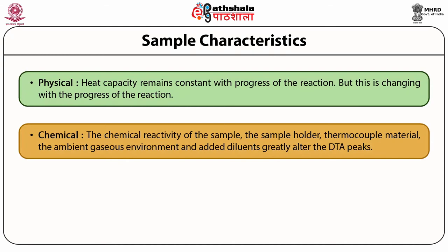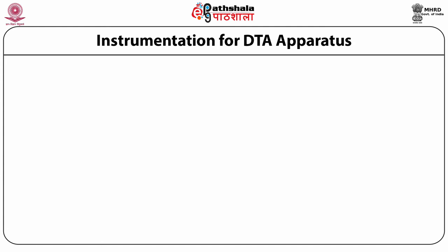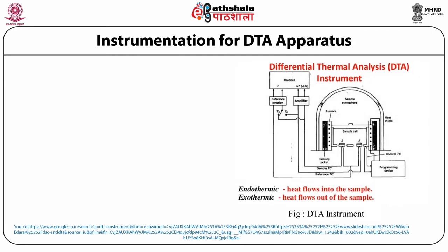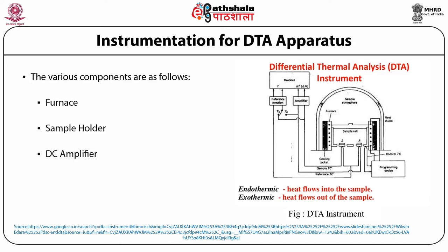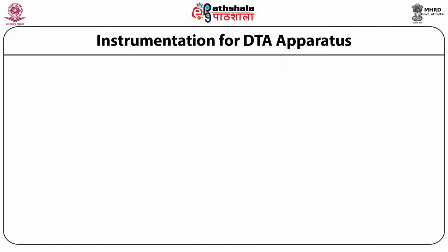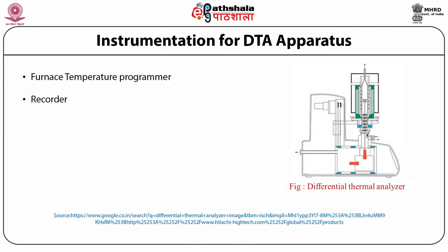Chemical changes: chemical reactivity of the sample, sample holder, thermocouple material, ambient gaseous environment, and added diluents greatly alter the DTA peaks. DTA instrumentation: a large number of different instrument types are available for DTA studies. The DTA apparatus has various components including a furnace, sample holder, DC amplifier, differential thermal detector, furnace temperature programmer, recorder, and control equipment.